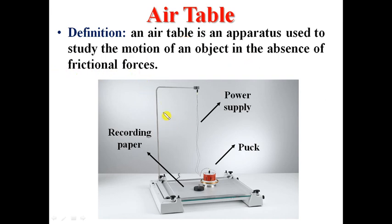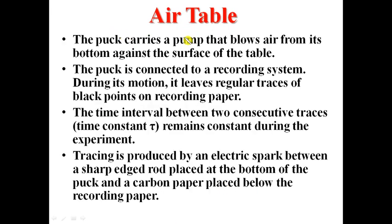What are the basic parts of an air table? It consists of a plane or glass plane, a puck whose motion is to be studied, and this puck is fed by a voltage. Now, to eliminate friction, the puck has a pump or carries a pump that blows air from its bottom against the surface of the table.